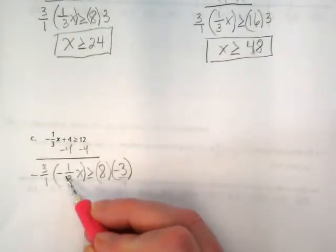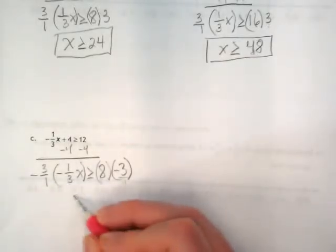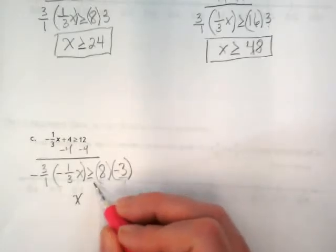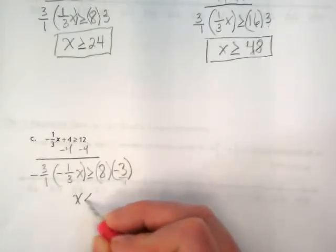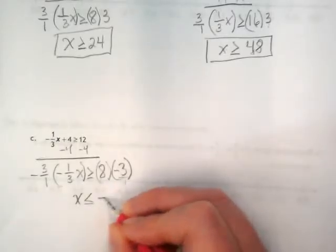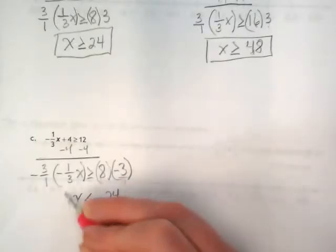Because we're multiplying by a negative, what has to happen with the symbol? It flips. And 8 times negative 3 gives us negative 24.